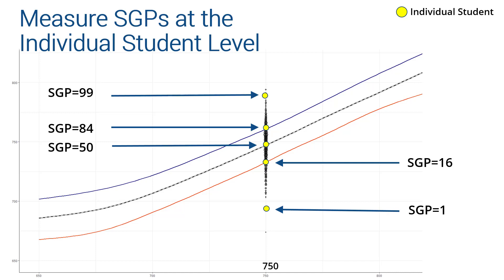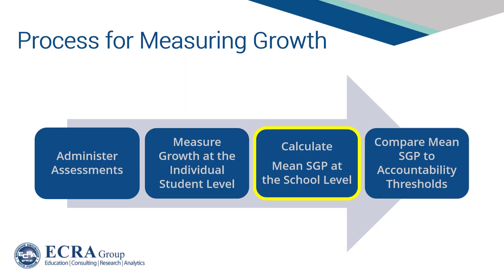The student growth percentile model recommended by the Technical Advisory Committee establishes a normative definition for student growth. While it is possible to use an SGP model to compare each student to a fixed standard for growth, the information currently available suggests ISBE's implementation will likely create a new normative reference each year. An effect of rebuilding growth curves each year is that the SGP model will inherently have a competitive property, mathematically limiting the percentage of students that can receive favorable growth percentiles. Once each student receives a growth percentile, a methodology to summarize growth for groups of students must be established. The TAC recommends using the mean, or simple average, of student growth percentiles to summarize growth for groups of students and ultimately the school and district.